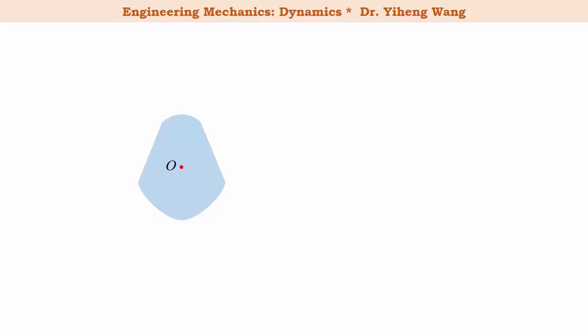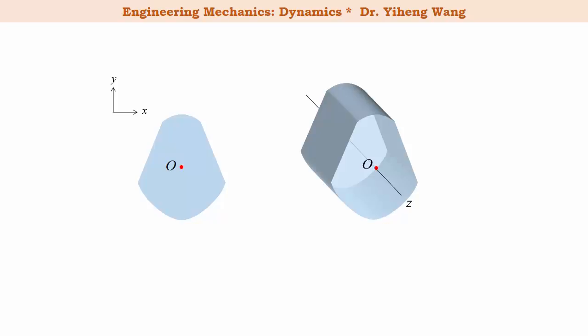For rigid body planar motion, rotation is limited within the x-y plane. Although it looks like rotation is only about a fixed point O in this plane, in reality rotation occurs about a z-axis that passes through point O and is perpendicular to the x-y plane. Therefore this is known as rotation about a fixed axis.